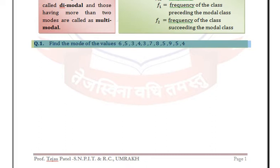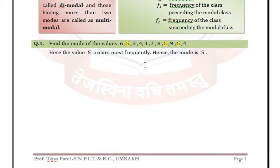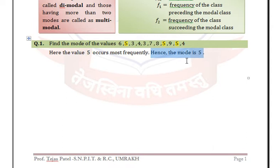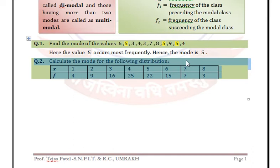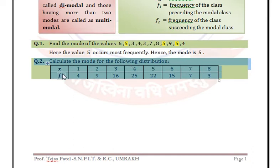Find the mode of the values. Here we can see that we have only observations, so we need to find the value which is repeated the maximum number of times. We can see that 5 is the repeated value, so the mode is 5.